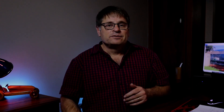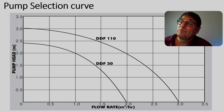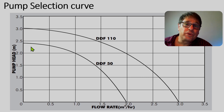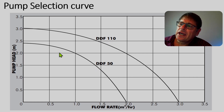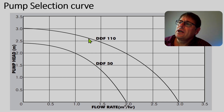The first thing that's important when you want to buy a pump is the pump curve. Let's have a look at a typical pump curve. This is a typical pump chart that you'll use in the selection of the pump. There are two pumps indicated on this chart: a DDF 50 and a DDF 110.